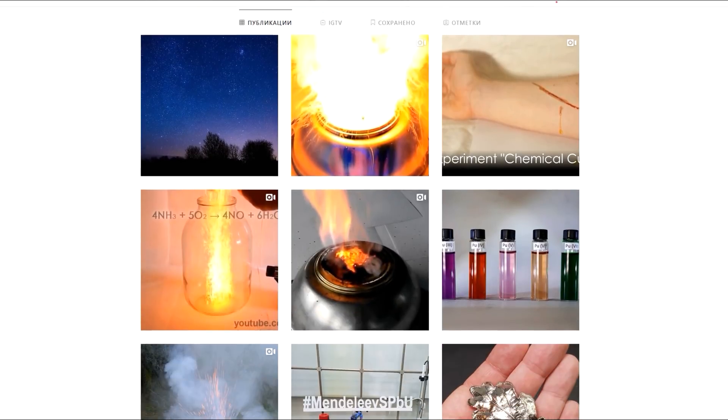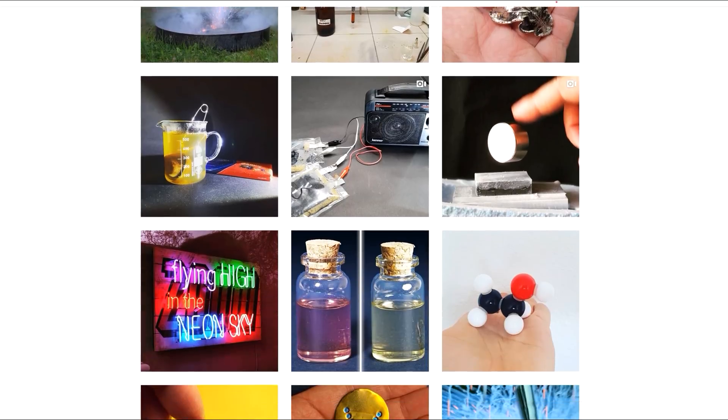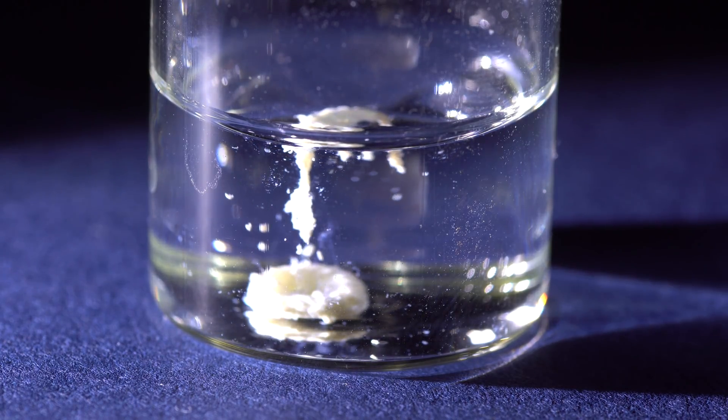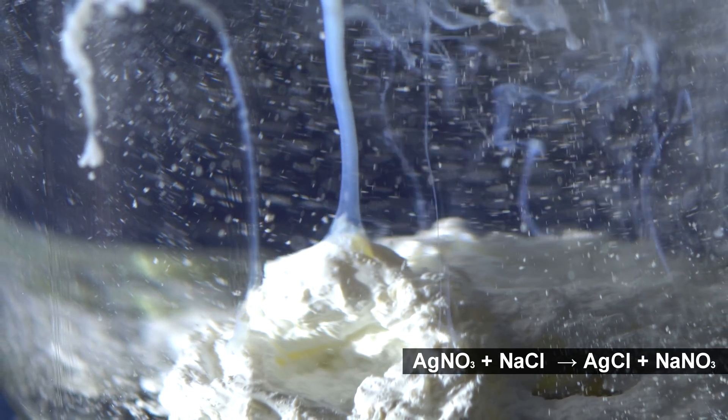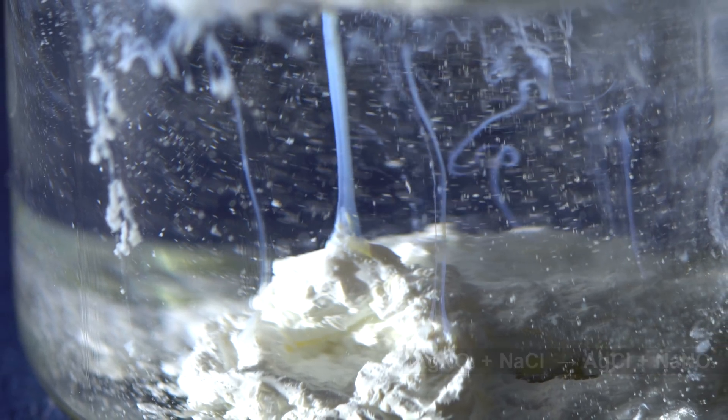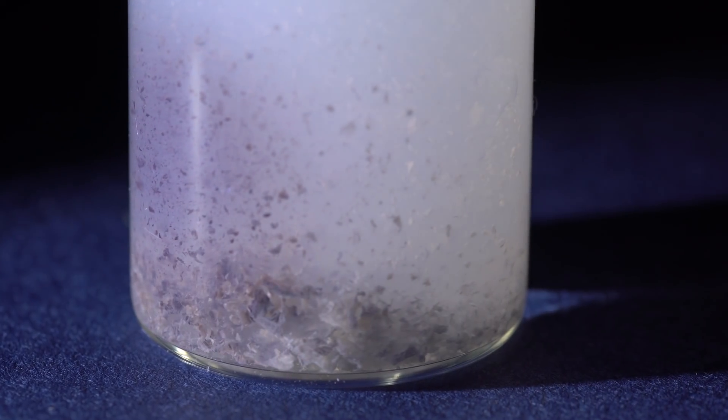The thing is, if you mix silver nitrate with a table salt solution, there will form a white insoluble sediment: silver chloride. This compound is photosensitive, which is why it breaks down into finely divided silver and gaseous chlorine under the influence of ultraviolet light.